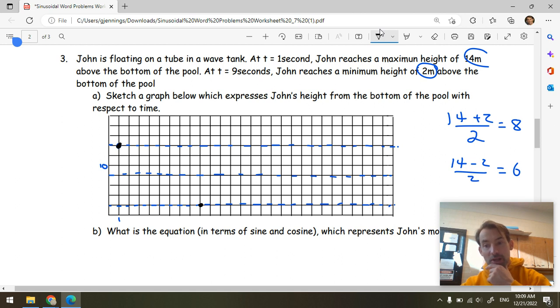Now, what we know is from 1 to 9, that's 8 seconds. And that tells me that we've gone through half a period because it takes half a period to go from a maximum to a minimum. So the period is 16. So if I go over another 8, 9 plus 8 would give me 17. So then we're going to go 10, 11, 12, 13, 14, 15, 16, 17. And we're back to the maximum there. Then we could go over another 8. That should be 25. And we're back down to the minimum.